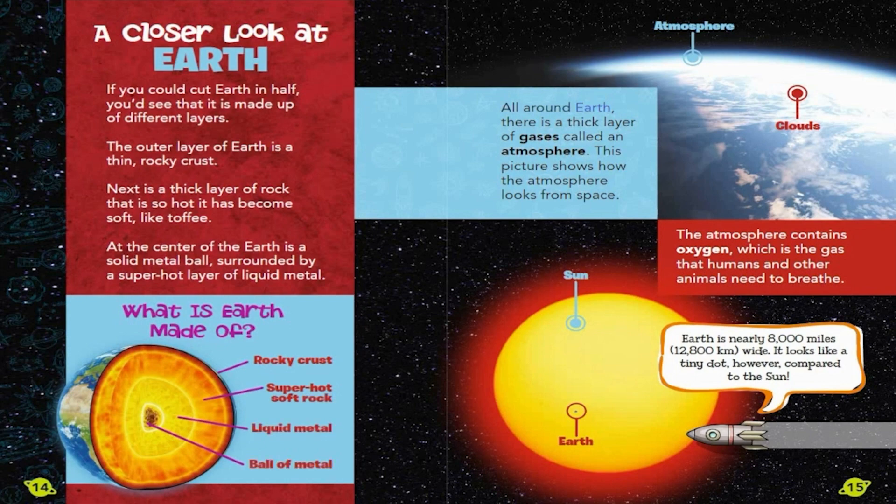All around Earth, there is a thick layer of gases called an atmosphere. This picture shows how the atmosphere looks from space. The atmosphere contains oxygen, which is the gas that humans and other animals need to breathe.